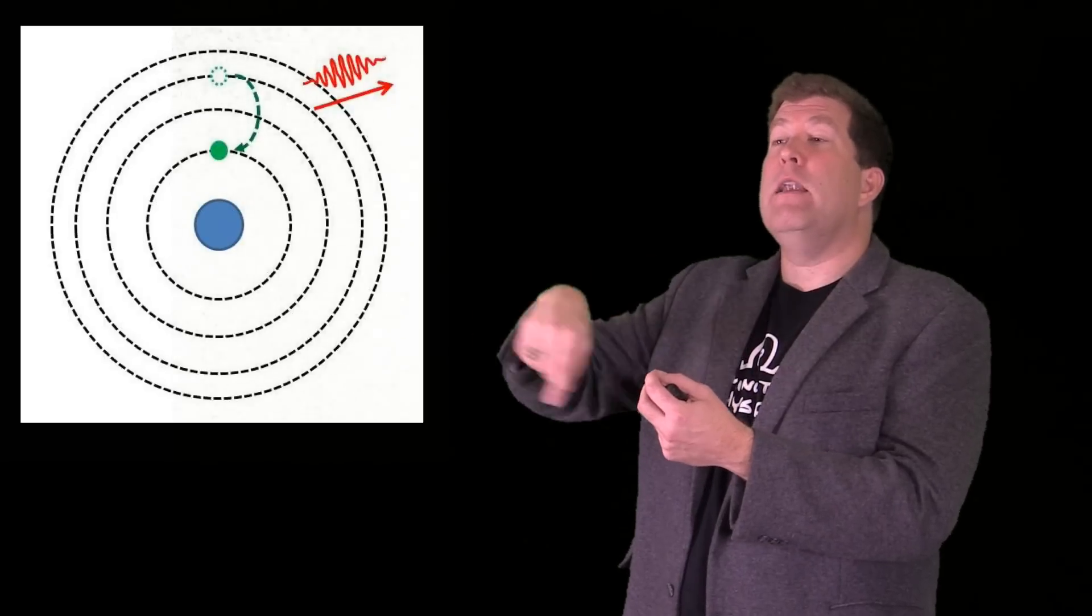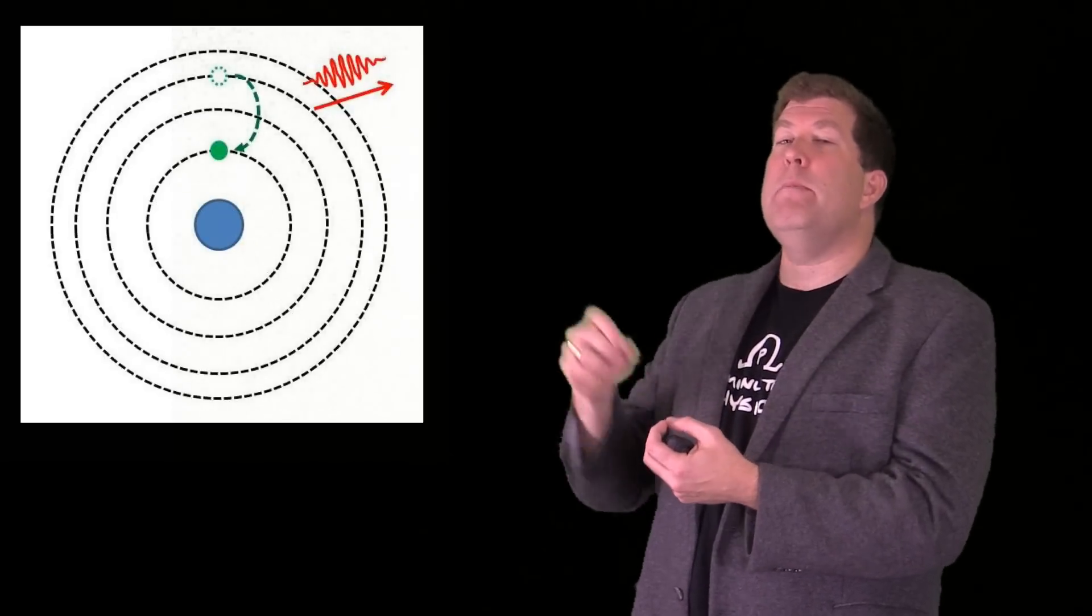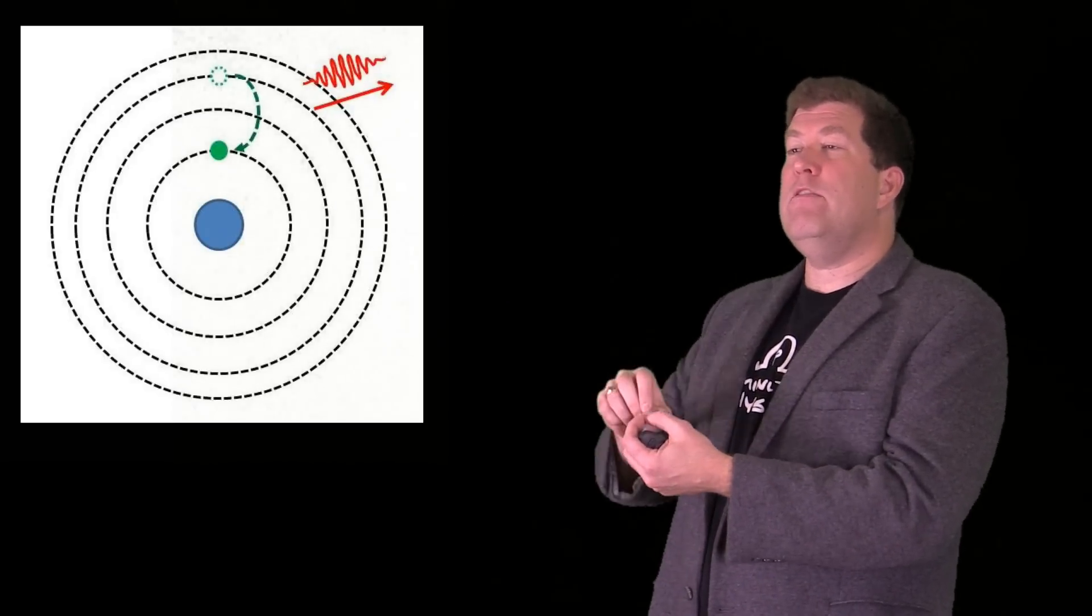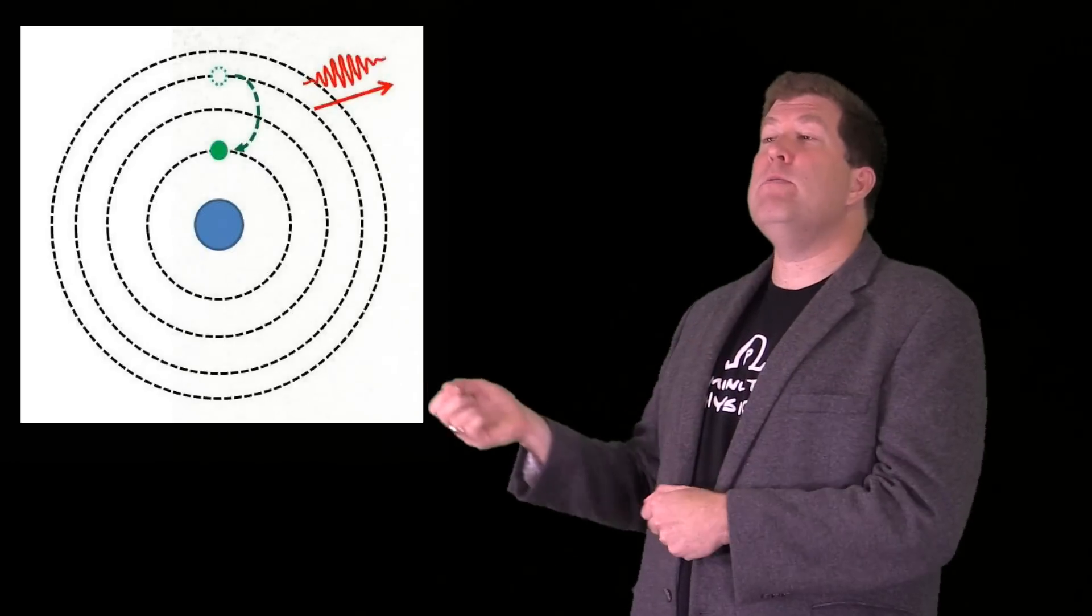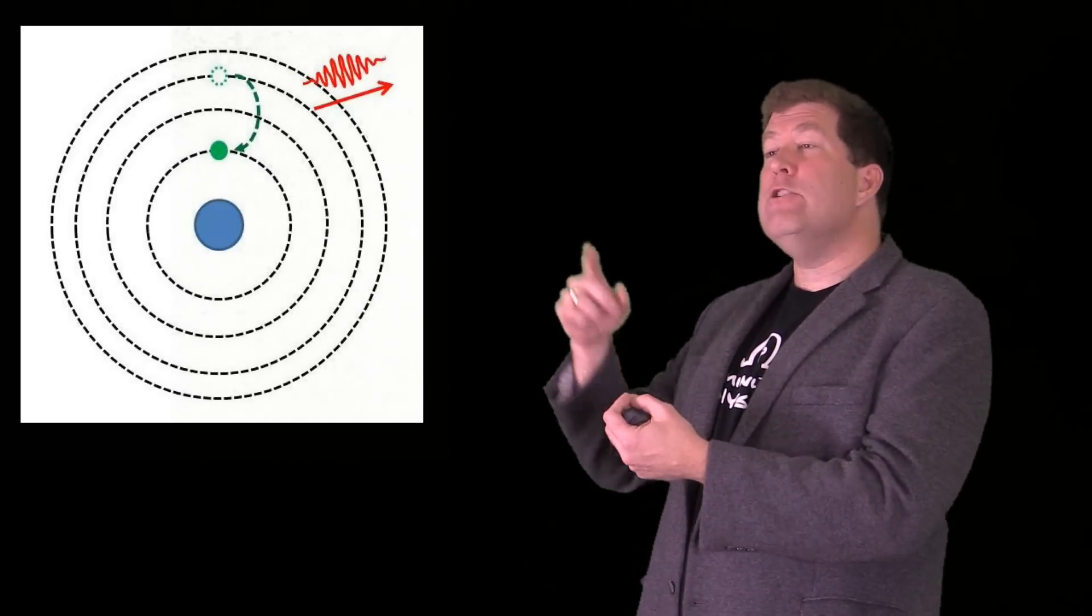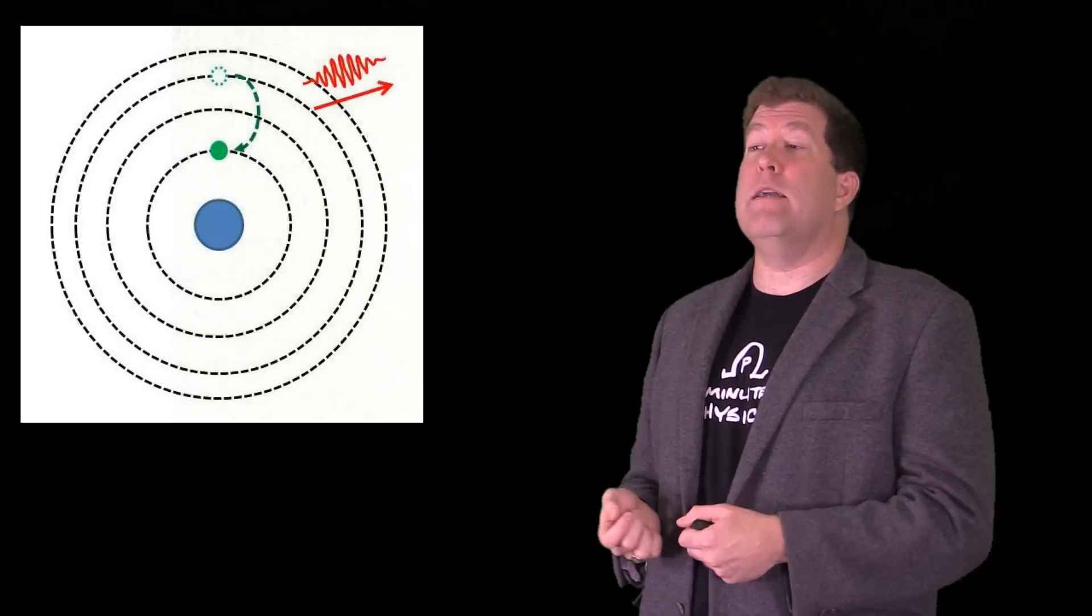But Nils Bohr, who was working with Rutherford, pointed out that, you know, atoms manifestly exist, so maybe the rules need to change. Bohr suggested that for certain special orbits an electron just goes around happily, not emitting any light. And atoms absorb or emit light only when moving between these special orbits, with the frequency of the light depending on the energy difference in just the way that Planck and Einstein introduced.